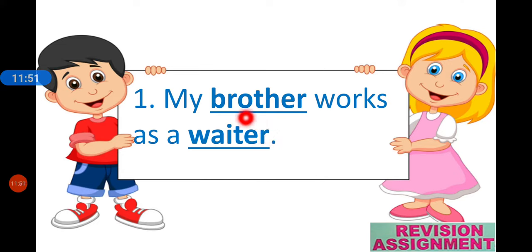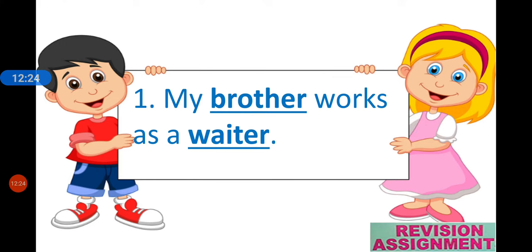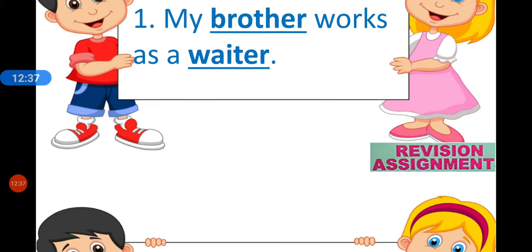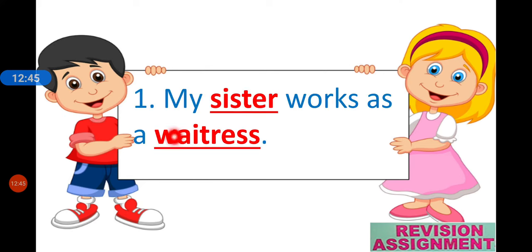What is the opposite gender of brother? Very good — sister. And the opposite gender of waiter: we add -ess, and the e goes away, making waitress. So the sentence becomes: 'My sister works as a waitress.' Be careful about spellings — waiter is w-a-i-t-e-r and waitress is w-a-i-t-r-e-s-s.